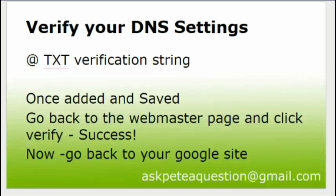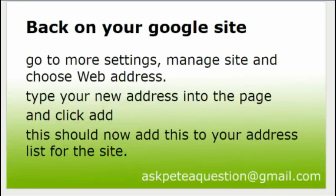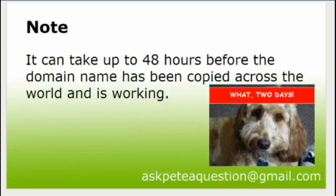Now we can go back to our Google website. Go to 'More Settings', 'Manage Site', choose 'Web Address' — you may already be there if you haven't moved off that page. Type your new web address into the box next to 'Web Address' and click 'Add'. If the domain has been properly verified it will move it up and list it as one of the addresses for your site.